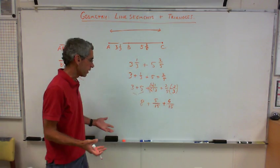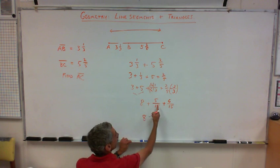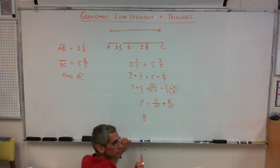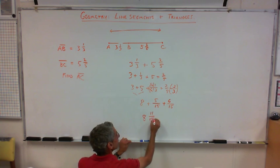So, Molly, what do I have? I have eight and what? Five fifteenths. Eleven fifteenths. Eleven fifteenths. Great. Beautiful.